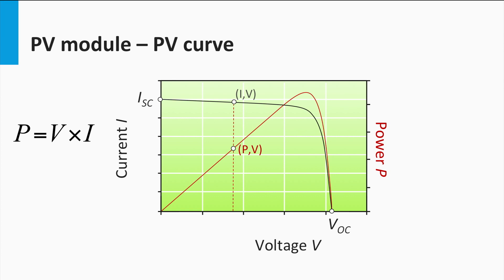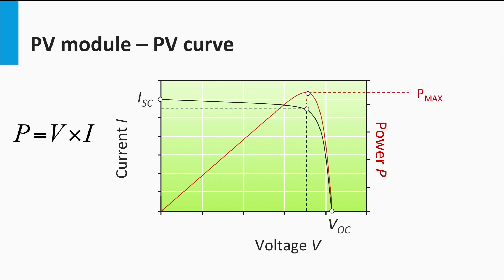Now what is the significance of the power P on the PV curve of a solar module? Well, this is the power that is produced and delivered to the rest of the PV system, and eventually the load. Therefore, it is clearly advantageous that the solar module operates at maximum power, as seen in the figure as the peak of the PV curve.